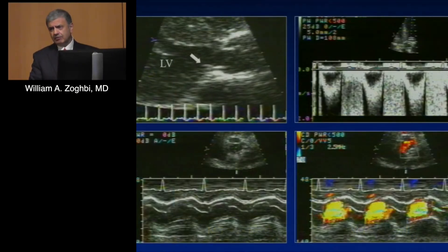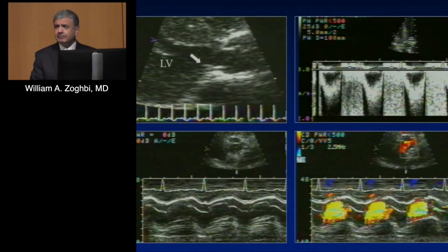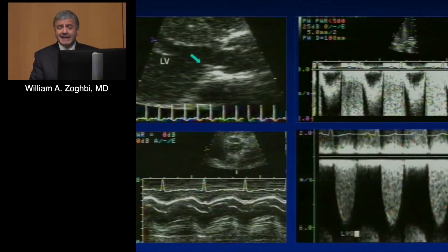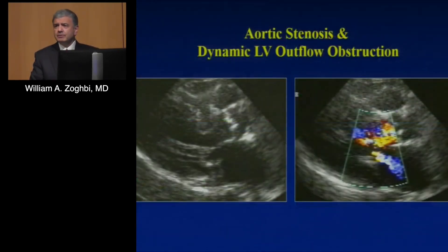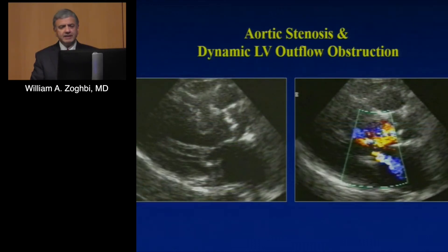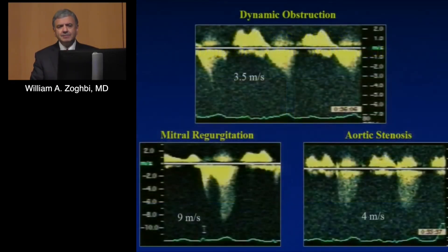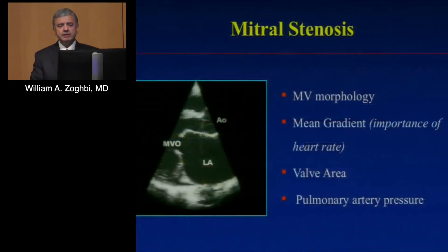Not everything with a gradient is aortic stenosis. You could have a subaortic membrane, supravalvular stenosis, or dynamic obstruction. Keep those in mind — in older individuals, you may still have dynamic obstruction on top of calcific aortic stenosis. At times it's very difficult to differentiate these gradients, so you've got to be careful.